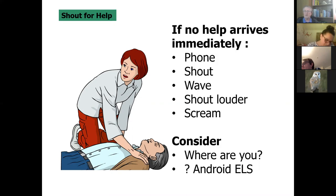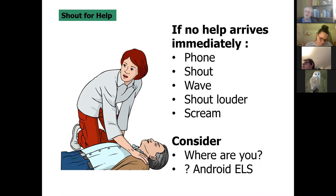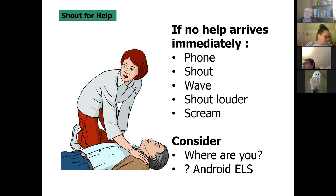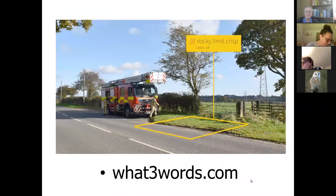Check for breathing for no more than 10 seconds. If no help arrives immediately, use a phone, shout, wave, chat louder if necessary. When summoning help in a surgery or clinical situation you should be able to describe where you are. If you can't, in many areas there is a way for emergency services to track your location using Android or iPhone — though it's not clear this is available everywhere, so I wouldn't necessarily rely on it.